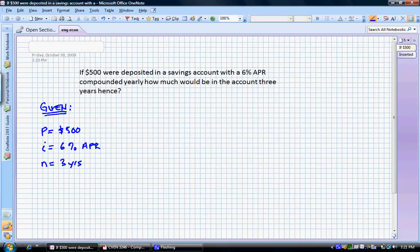And remember, I is the interest rate per year, and N is the number of interest periods. What we need to find in this problem is the future value of that account, F.